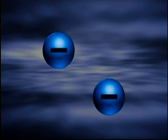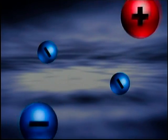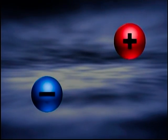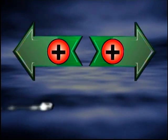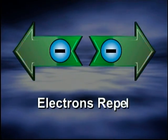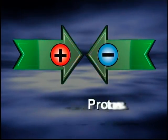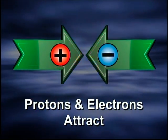The law of electrical charges states that particles with like charges repel each other, while particles with unlike charges attract each other. Protons repel each other. Electrons repel each other. Protons and electrons attract each other.